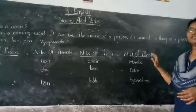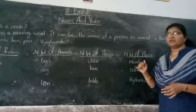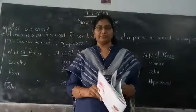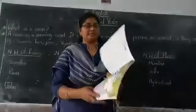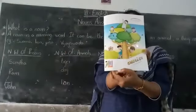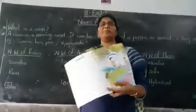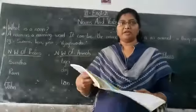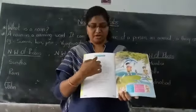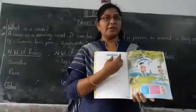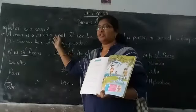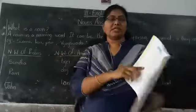Today we learned about nouns. Now, take your textbook and open page number four — this is your Volume One book, Third Class Volume One. On page four, you'll see the poem which is based on nouns and verbs. In upcoming classes we will learn about verbs, but now we are learning about nouns. I have given the definition and explained about nouns. Let's look at the poem.